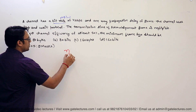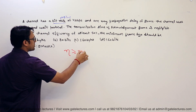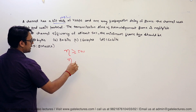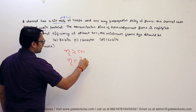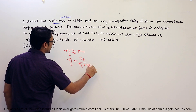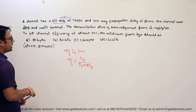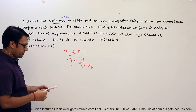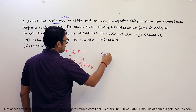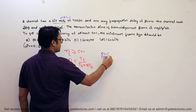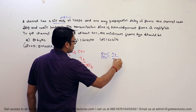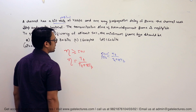To get a channel efficiency of at least 50%, the minimum frame size should be determined. Since at least 50% is required, efficiency should be greater than or equal to 50%. We know the formula for efficiency: efficiency equals TT divided by (TT plus 2 times TP). For efficiency greater than or equal to 50%, we write 50/100, so TT/(TT + 2·TP) must be greater than or equal to this value.